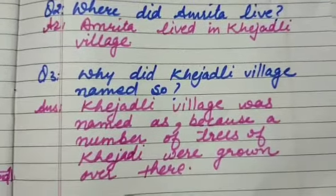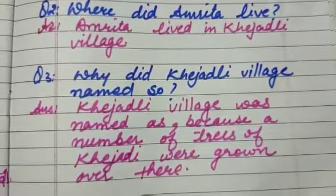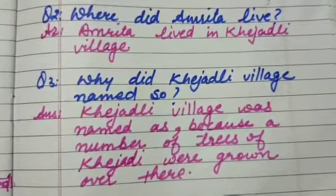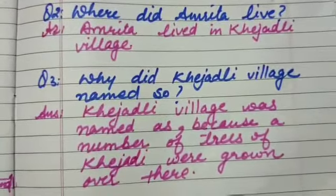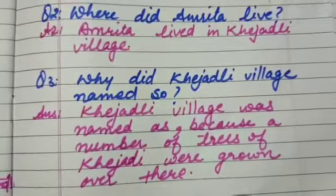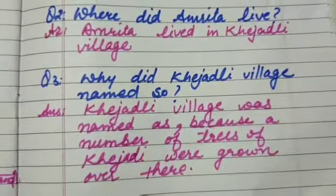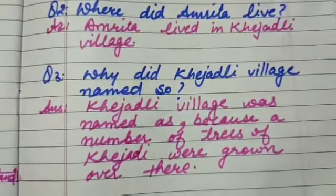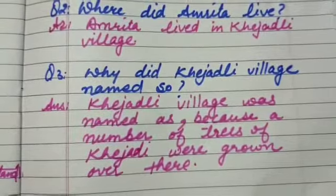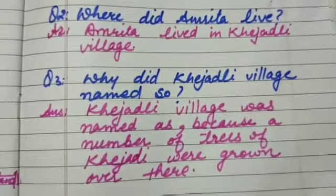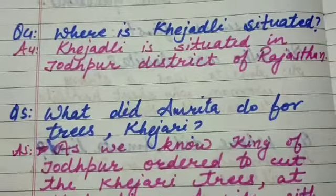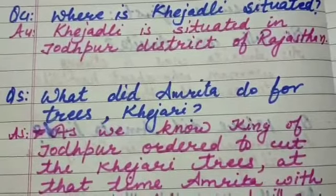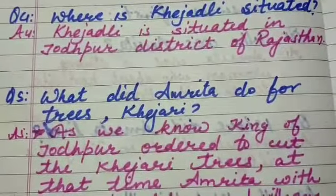Now the third question is: why did Khajarli village get named so? What was special for that? The answer is Khajarli village was named so because a number of Khajari trees were grown over there. Now the fourth question: where is Khajarli situated? Khajarli is situated in Jodhpur district of Rajasthan.